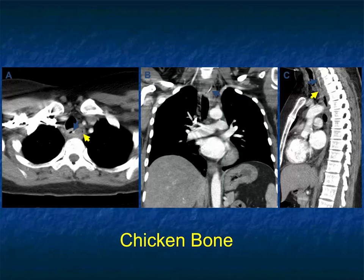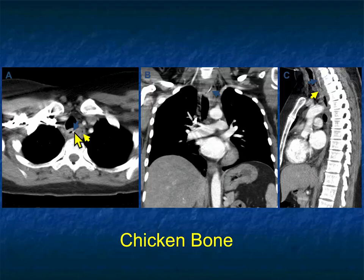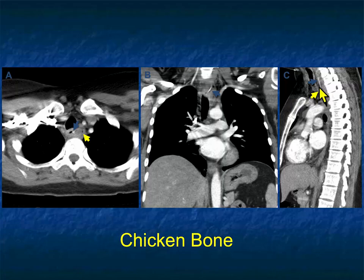Here's a nice example. The patient was eating fish and swallowed a bone. You can see the linear density here — fish bones are very dense. On the coronal view you can see the entirety of it; it's about two centimeters in length. And you can see there's a little bit of extraluminal air. The diagnosis is a chicken bone, and you have to go in with endoscopy and take it out.